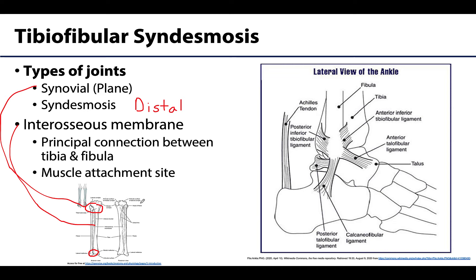That makes sense given the function: we don't have the rotation occurring with pronation and supination, so the fibula is not rotating over the tibia. There's less movement and more stability here, so it makes sense that we have fewer synovial joints. If you've ever heard the term 'high ankle sprain,' it's actually referring to some type of disruption to the ligaments associated with the distal tibiofibular joint.